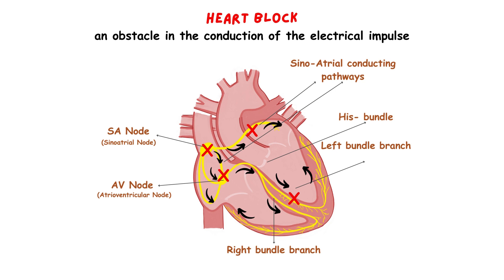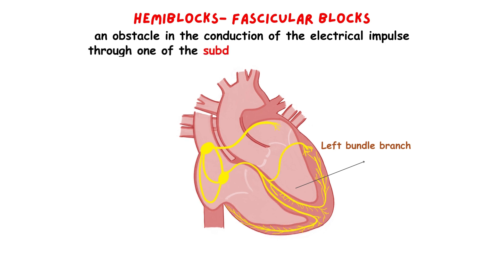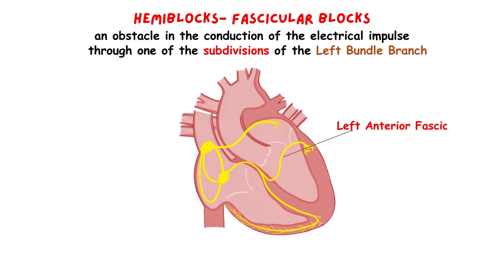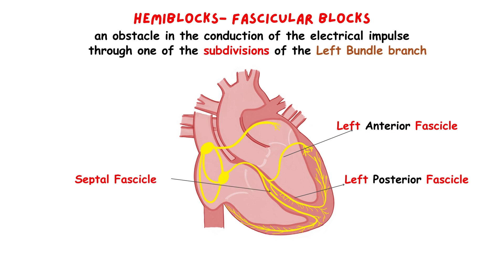When we talk about hemiblocks or fascicular blocks, we refer to a block in the conduction of the electrical impulses through one of the subdivisions of the left bundle branch. The left bundle branch divides into three fascicles: the anterior, the posterior, and the small septal fascicle. The anterior and the posterior fascicle conduct impulses to the whole left ventricle, and the septal fascicle is responsible for conducting the impulses to the left septal surface.